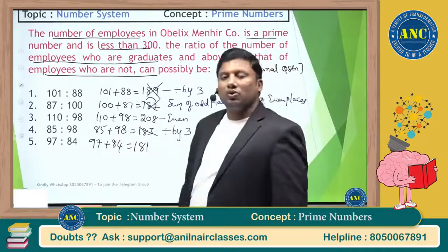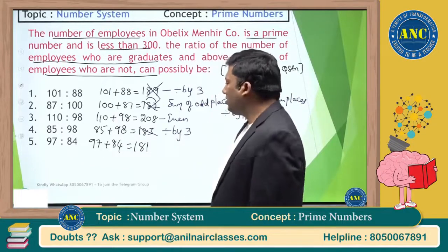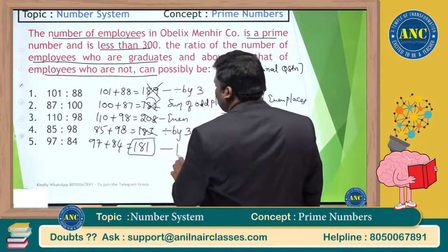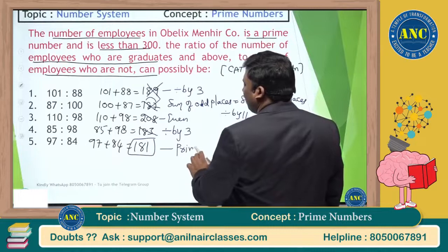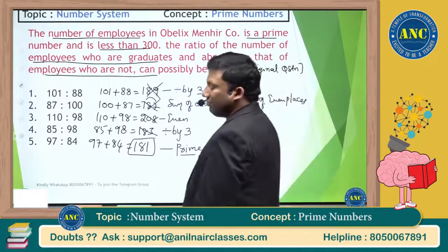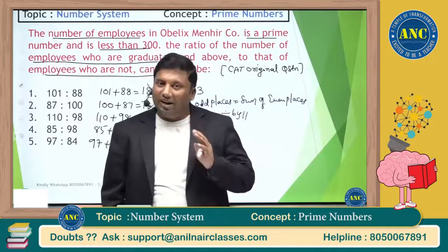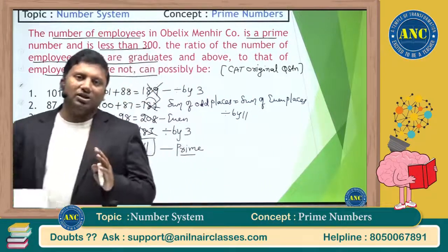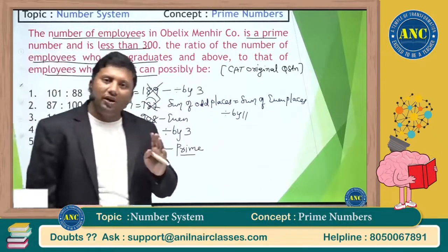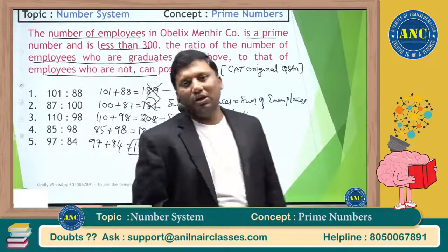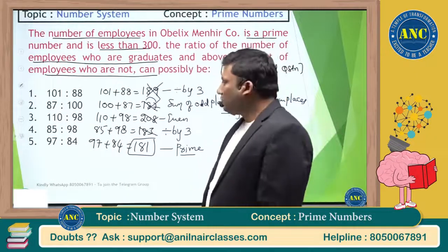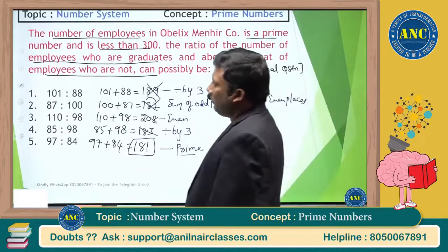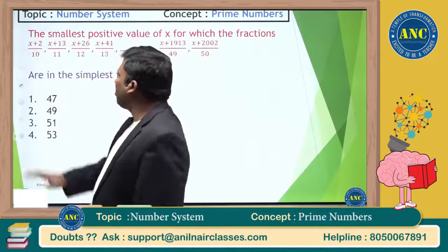208 is an even number — other than 2, no even number is prime. So 208 is eliminated. The only remaining option is 181, which is prime. The answer is option 5: 181. It's a very simple question — just check which of the given totals is a prime number.